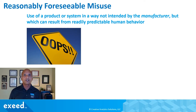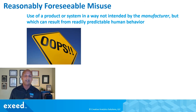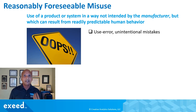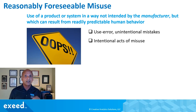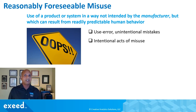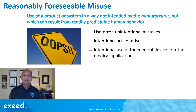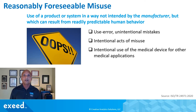What's a reasonably foreseeable misuse from an ISO point of view? It is use of a product or system in a way not intended by the manufacturer, but which can result from readily predictable human behavior. This includes use error — unintentional mistakes where people forget, get distracted, or misunderstand directions. It also includes intentional acts of misuse, such as ignoring instructions because someone thinks they already know how to use the device. Finally, there's intentional off-label use, where a doctor may decide to use your product for a different medical application based on their clinical judgment — which is perfectly fine, but something we need to anticipate.